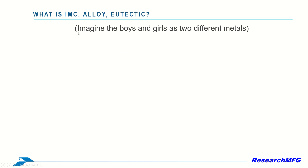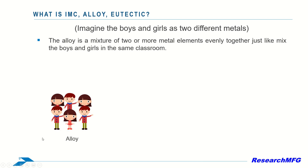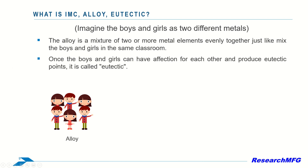Imagine boys and girls as different metal elements. Alloys are like mixing boys and girls in the same classroom, where they coexist evenly. When the boys and girls form eutectic points, it's referred to as eutectic.